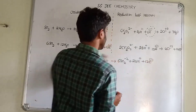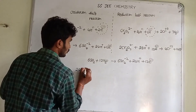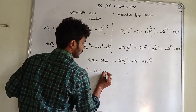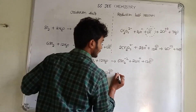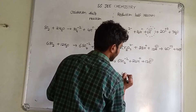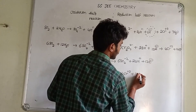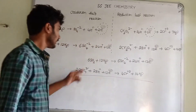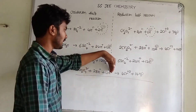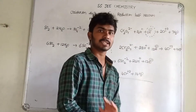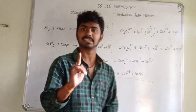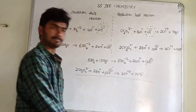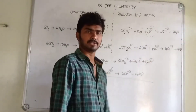Now we will have the equations to cancel. We will cancel the electrons — 12 electrons on both sides cancel. So the combined equation: 6SO2 plus 12H2O plus 2Cr2O7²⁻ plus 28H⁺ gives 6SO4²⁻ plus 24H⁺ plus 4Cr³⁺ plus 14H2O. Cancel 12 electrons — they cancel out.